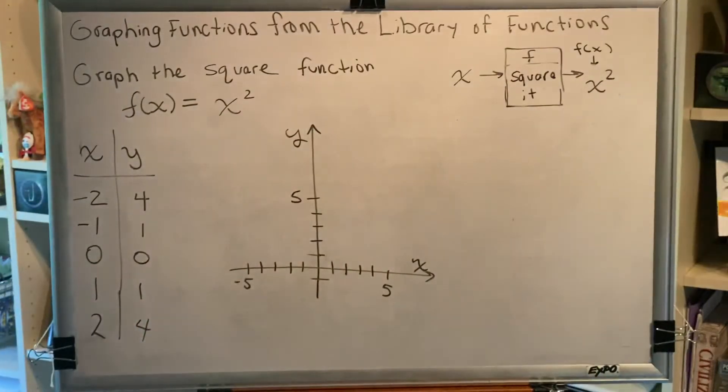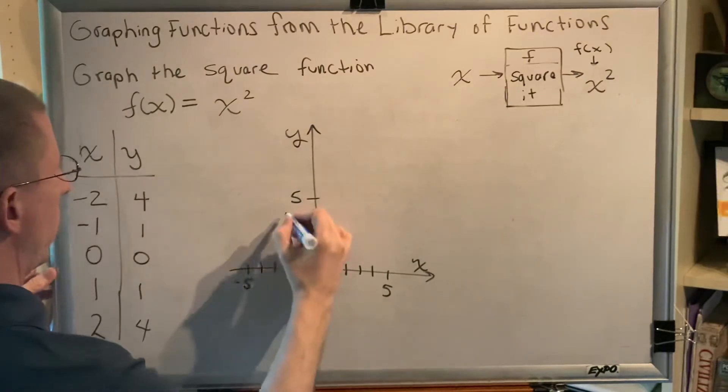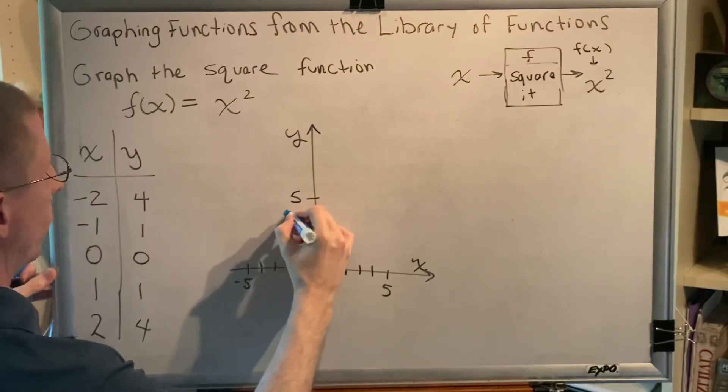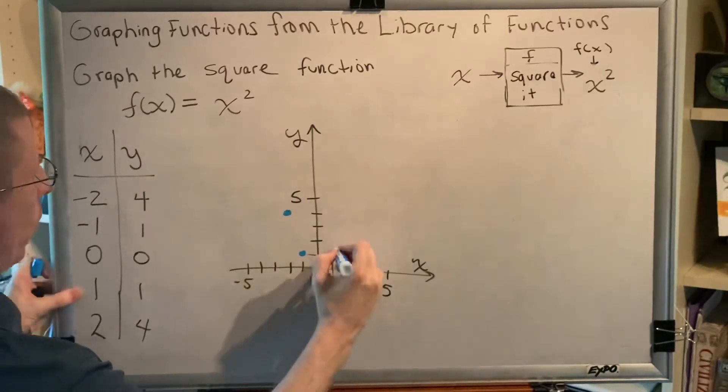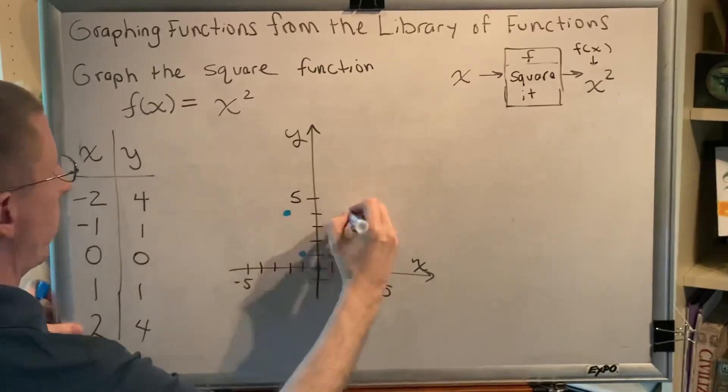And let's plot our points. Negative 2, 4 is here. Negative 1, 1 is here. 0, 0 is here. 1, 1 is here. 2, 4 is here.